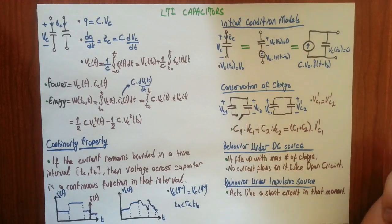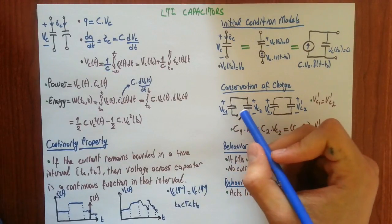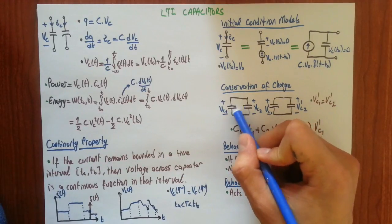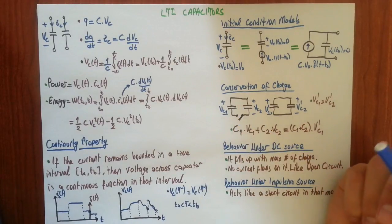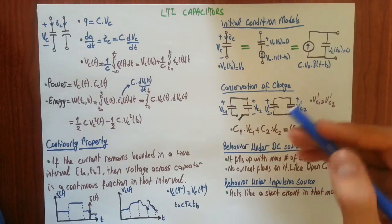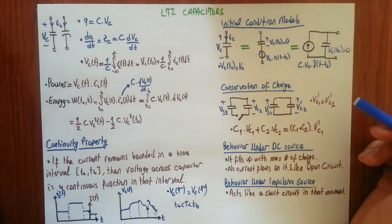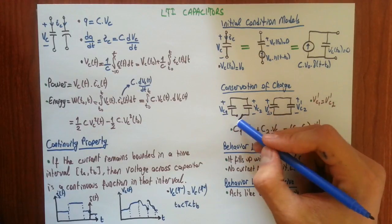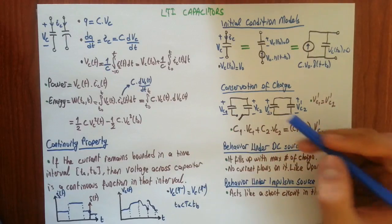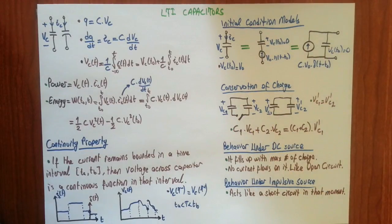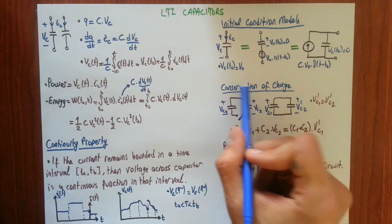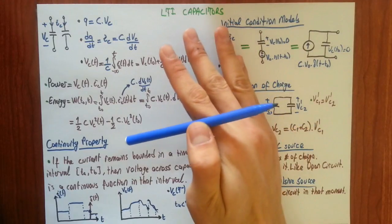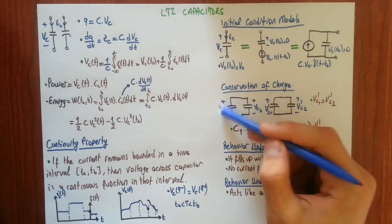Conservation of charge principle: In some questions, you will see that you will have two or three or whatever capacitors you have. And at a time instance, you will turn off the switch. After turning off the switch, you will be asked to find a voltage across capacitor or some output. To find that output, you will not be able to apply conservation of energy, because while turning the switch off, you may have sparks going out to the surrounding or some energy losses. Because of that, you will need to apply conservation of charge principle.